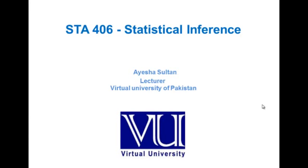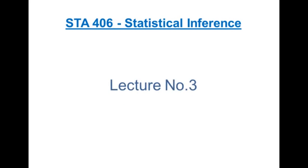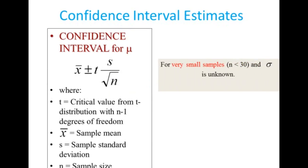We have confidence interval for the population mean mu when sample size is large. But when sample size is small, that is n less than 30, we use t-distribution in place of z-distribution for finding the confidence interval for mu. When n is less than 30 and sigma (population standard deviation) is unknown, we use t-distribution. The confidence interval formula uses the critical value t with n minus 1 degrees of freedom.